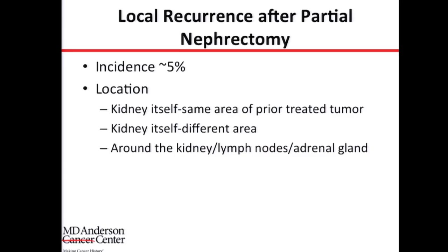Moving to recurrence after partial nephrectomy: the incidence is about 5%. The location could be in the kidney itself, in the same area where the tumor was — probably due to residual disease at the time of surgery that grew back. Because the kidney remains, there is also the possibility of new tumors appearing in a different location in that kidney, unrelated to the first surgery. Or the recurrence could be around the kidney, in lymph nodes, or in the adrenal gland.